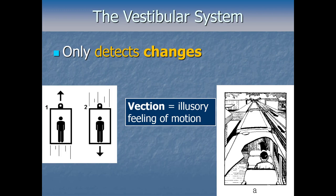Why does it feel like you're moving when you're not? Because the vestibular system isn't a speedometer — it doesn't track real velocity, only changes. Sitting still and moving at a constant speed both feel exactly the same to the vestibular system. So your brain is faced with two possibilities that would activate your visual and vestibular receptors identically: you're sitting still and the other vehicle is moving, or you're moving at a constant speed. Without direct evidence for either, the brain often ends up perceiving movement.